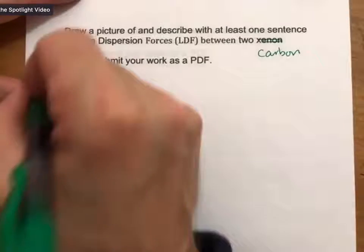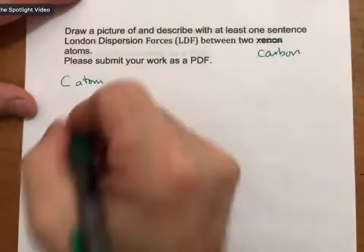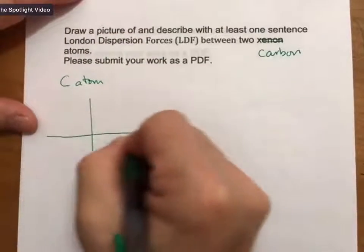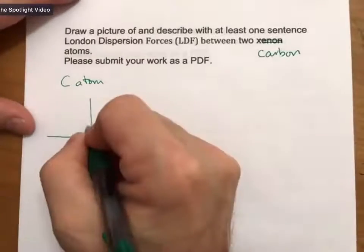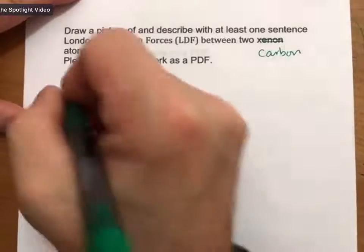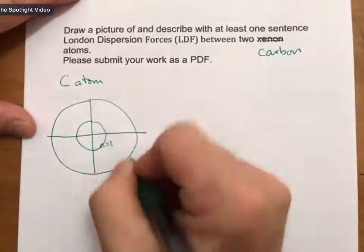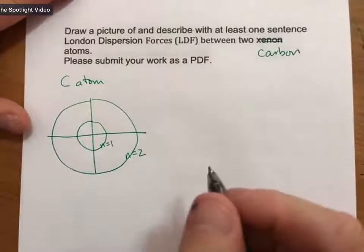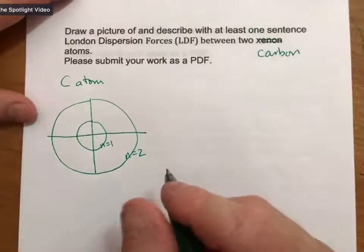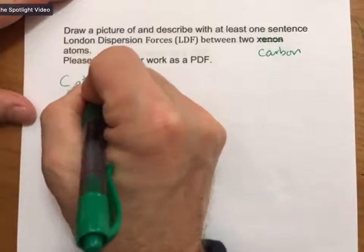We'll draw a carbon atom. And there's lots of ways to do it, but I'm going to draw it with n equals one and n equals two. And for a carbon atom, we know its electron configuration is 1S2, 2S2, 2P2.